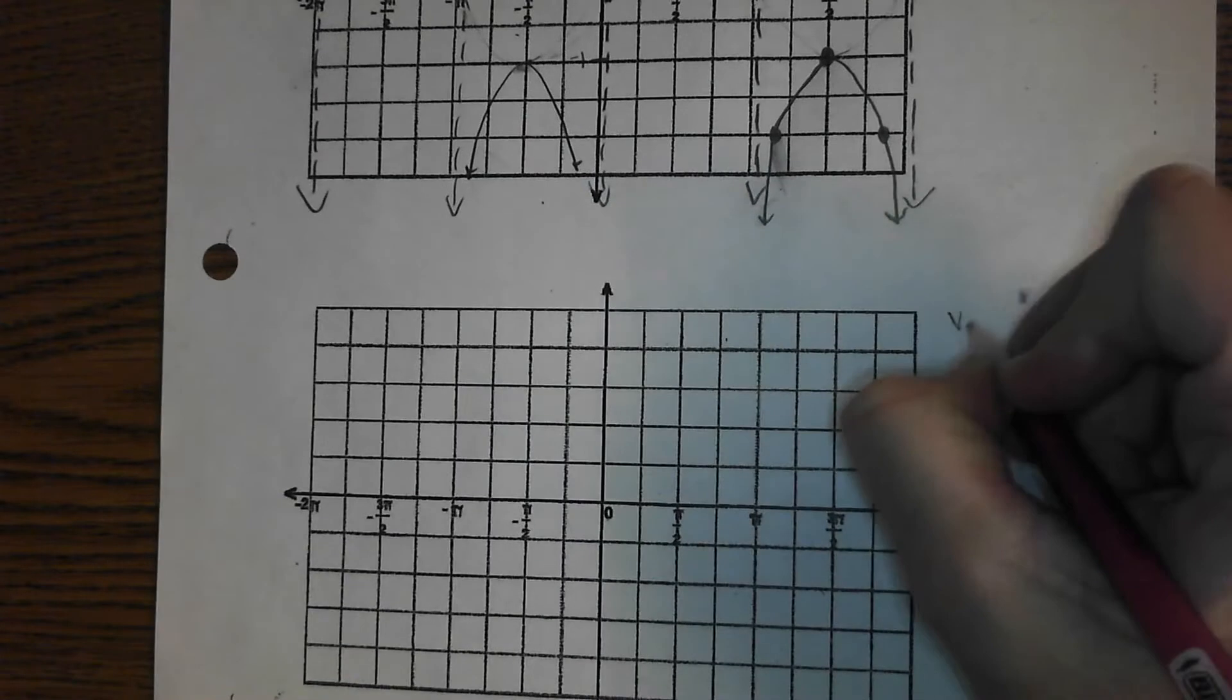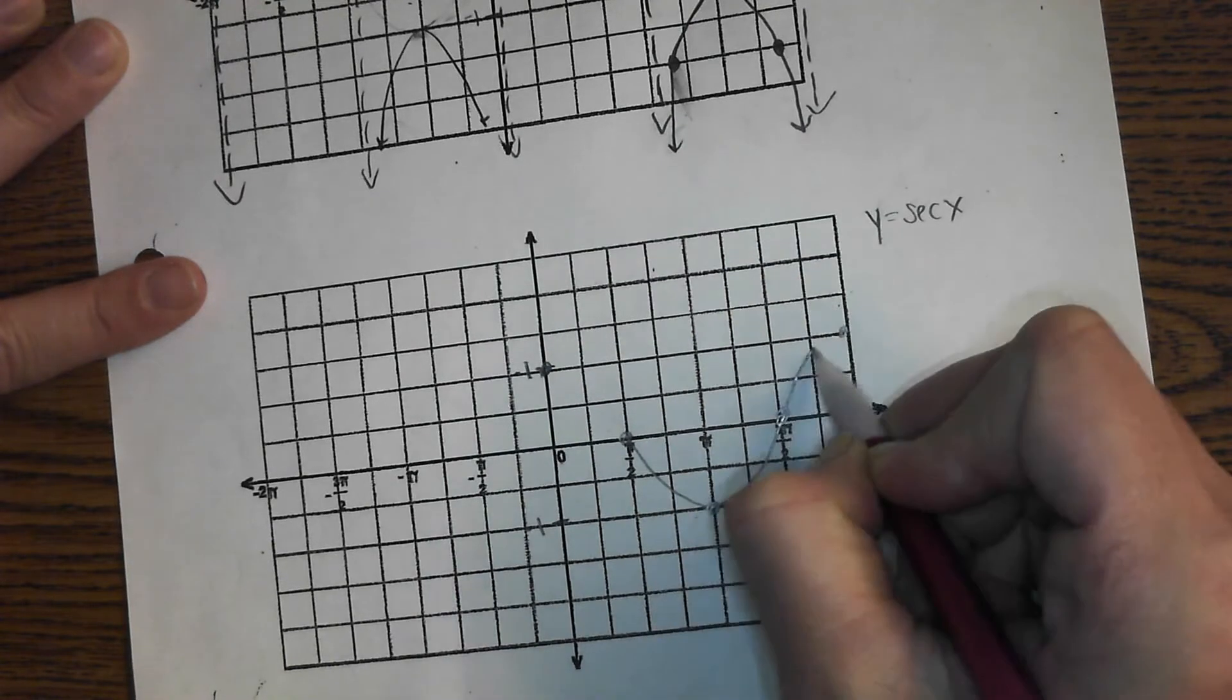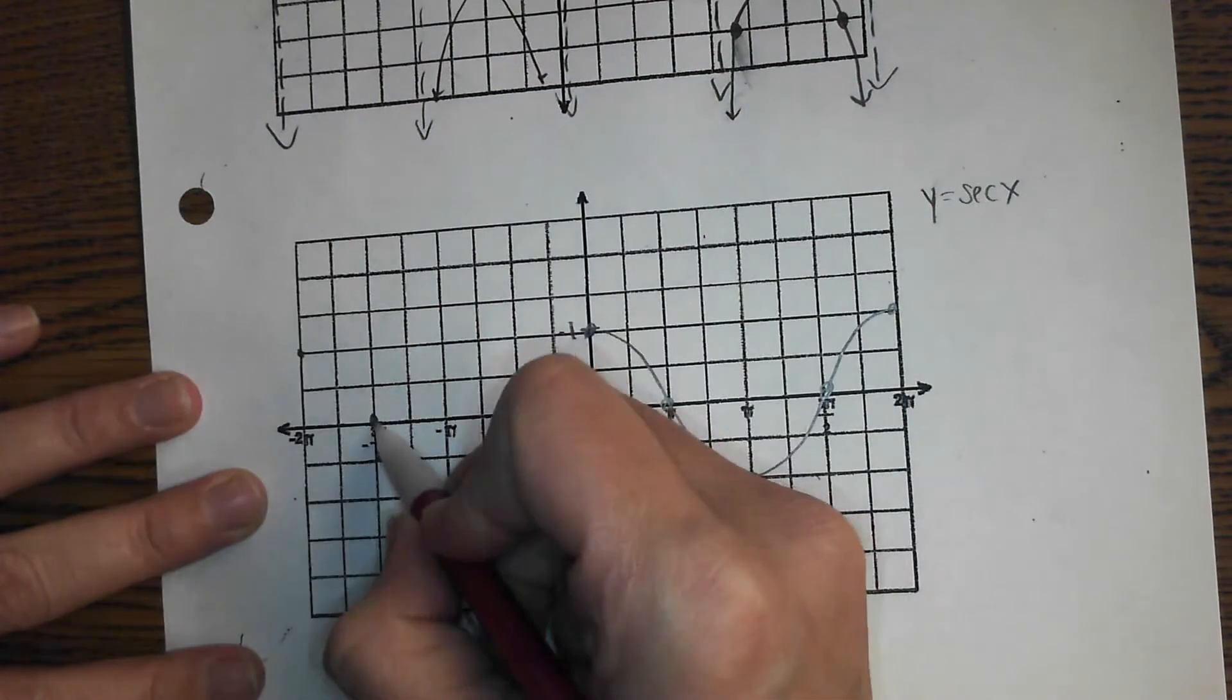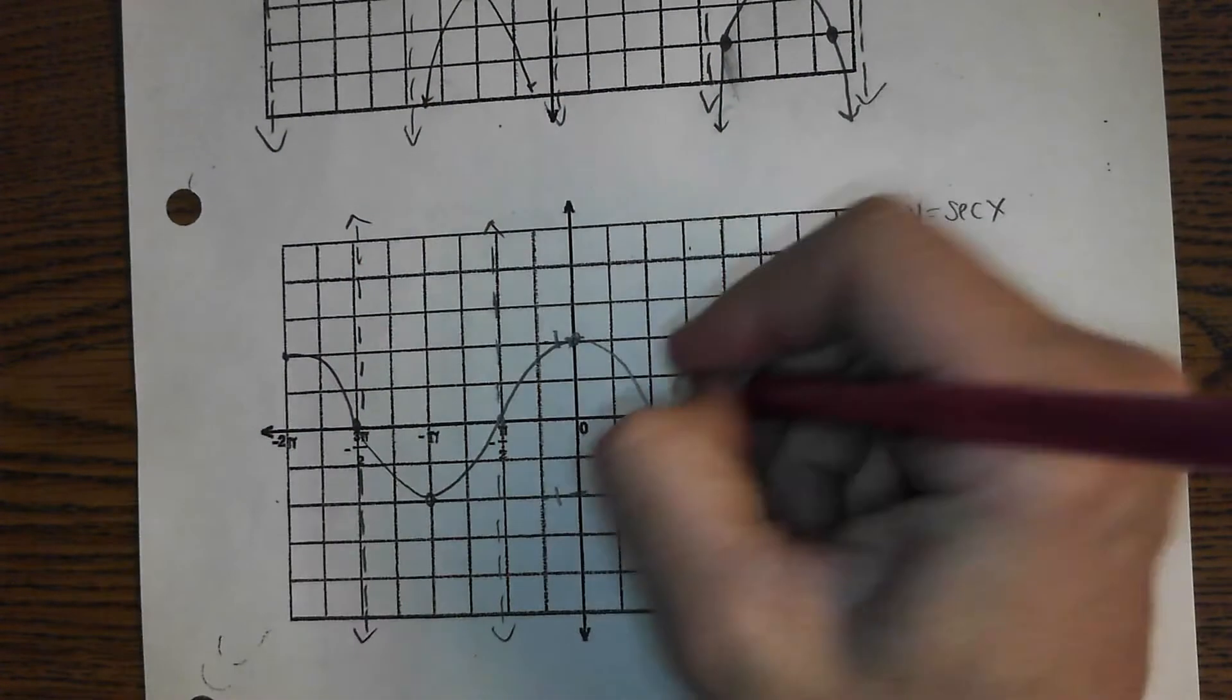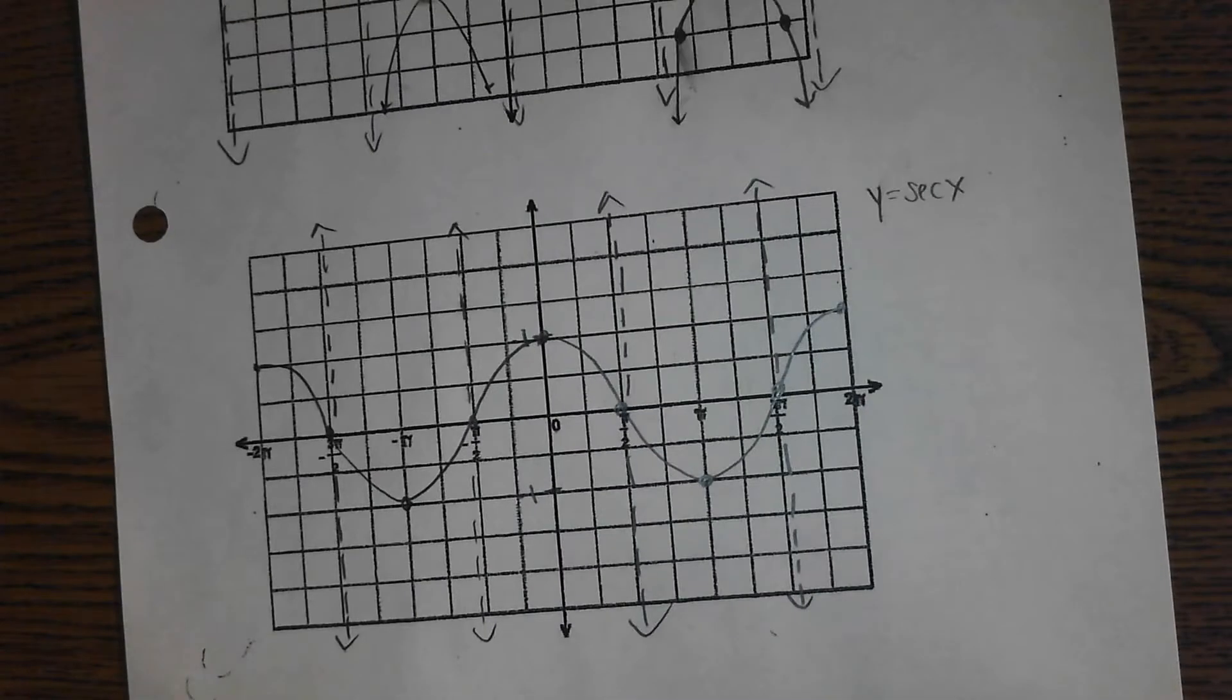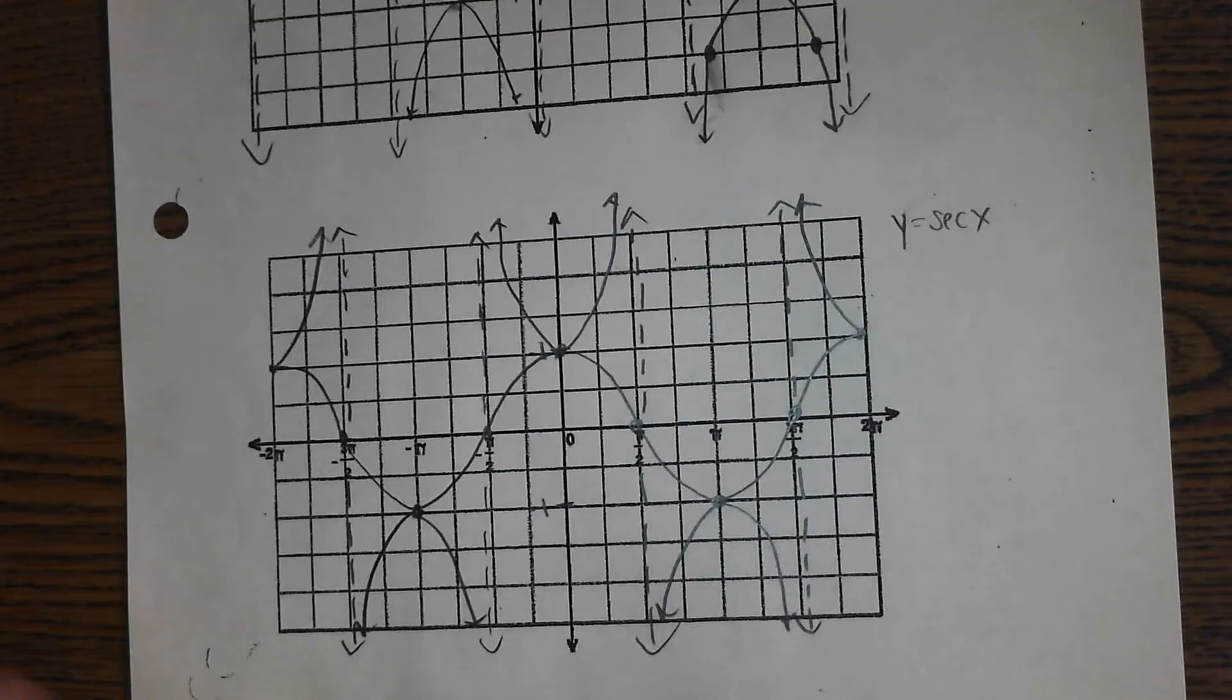And then your secant graph is just going to use the cosine parent graph as a guide. And then the first thing you should do is throw in your asymptotes just to give you that guide. So any place there's a zero, throw an asymptote. And then we just flip everything. And then erase your guide.